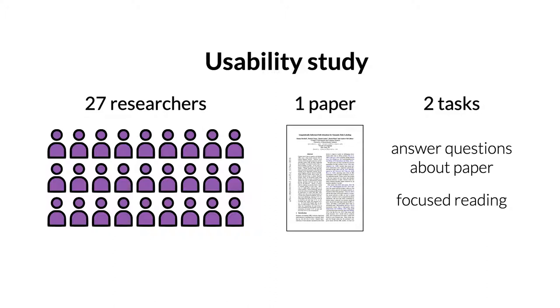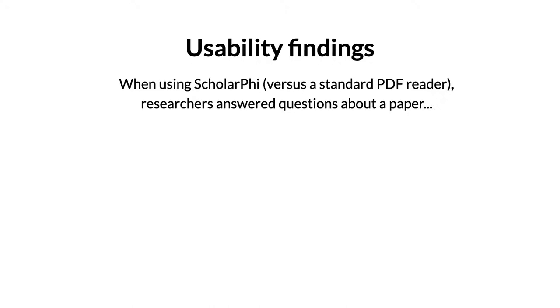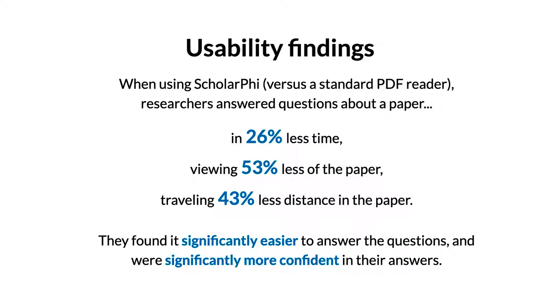In a usability study, 27 researchers used Scholarfy to read a scientific paper. When asked to answer questions about the paper with either a standard PDF reader or Scholarfy, researchers answered questions correctly with both tools. When using Scholarfy, they answered questions in significantly less time and found answers by looking at significantly less of the paper. They found it easier to answer the questions and were more confident in their answers.